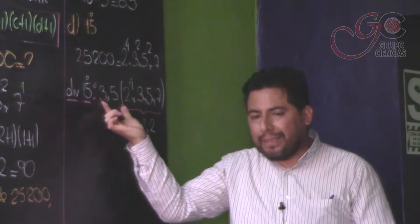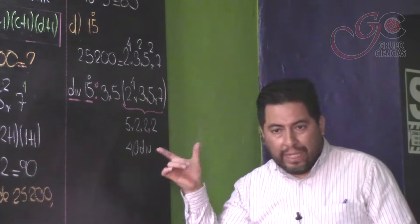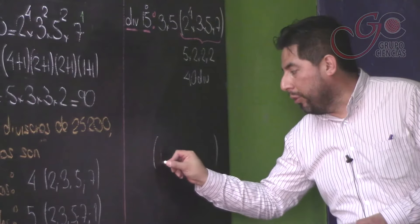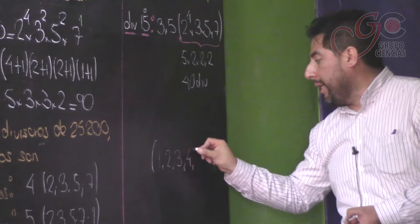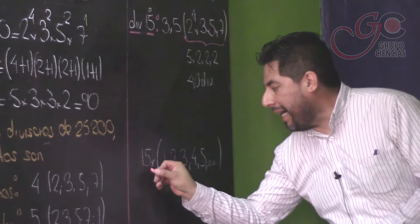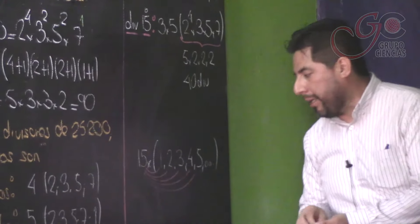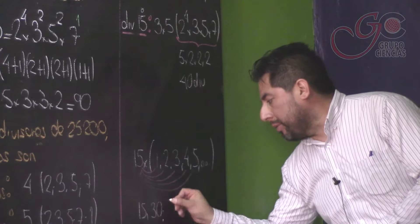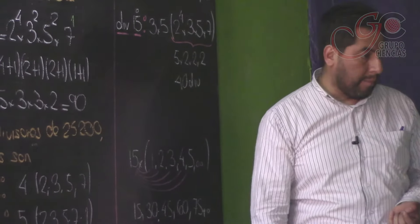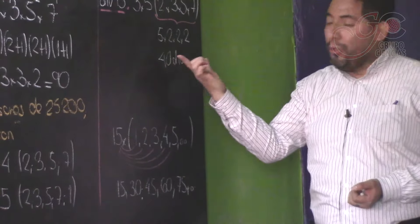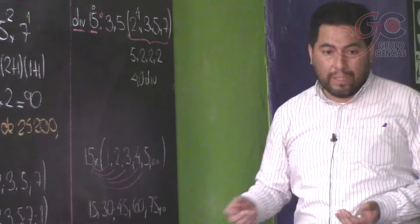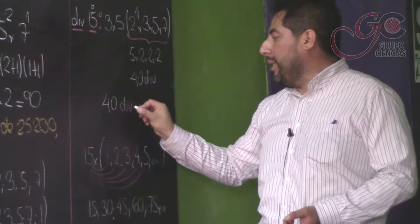Este 15 no se ha ido: el 15 va a multiplicar a cada uno de estos 40 divisores. En este paréntesis hay 40 divisores; algunos serán el 1, el 2, el 3, el 4, el 5 y así hay varios. El 15 multiplicará a cada uno: 15×1=15, 15×2=30, 15×3=45, 15×4=60... Y esos son los divisores múltiplos de 15. Si 40 divisores son multiplicados por 15, se convierten en 40 divisores múltiplos de 15. El número va a tener 40 divisores múltiplos de 15.